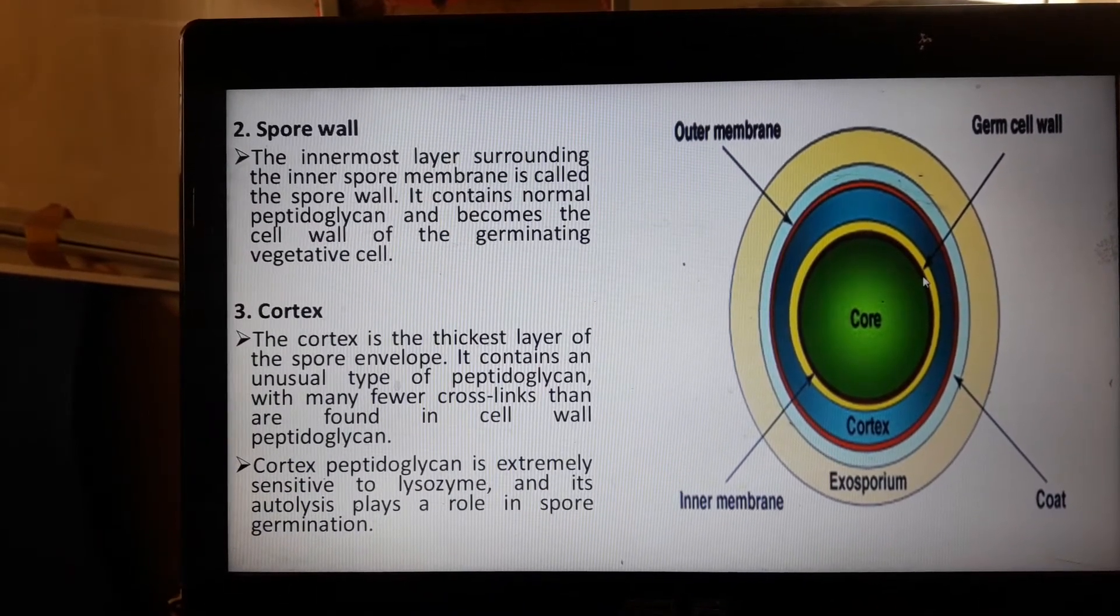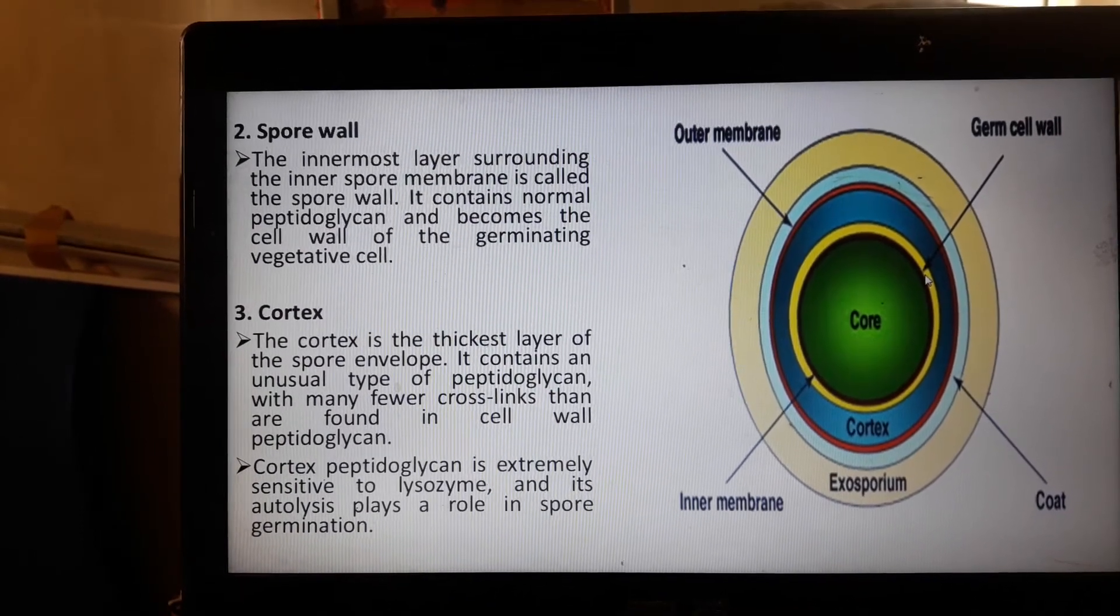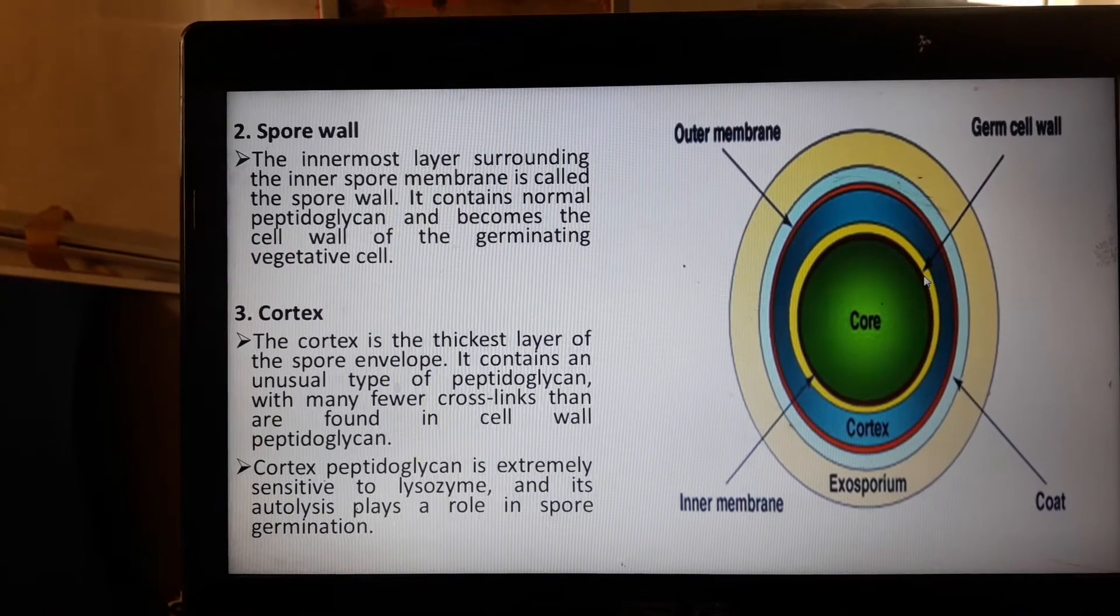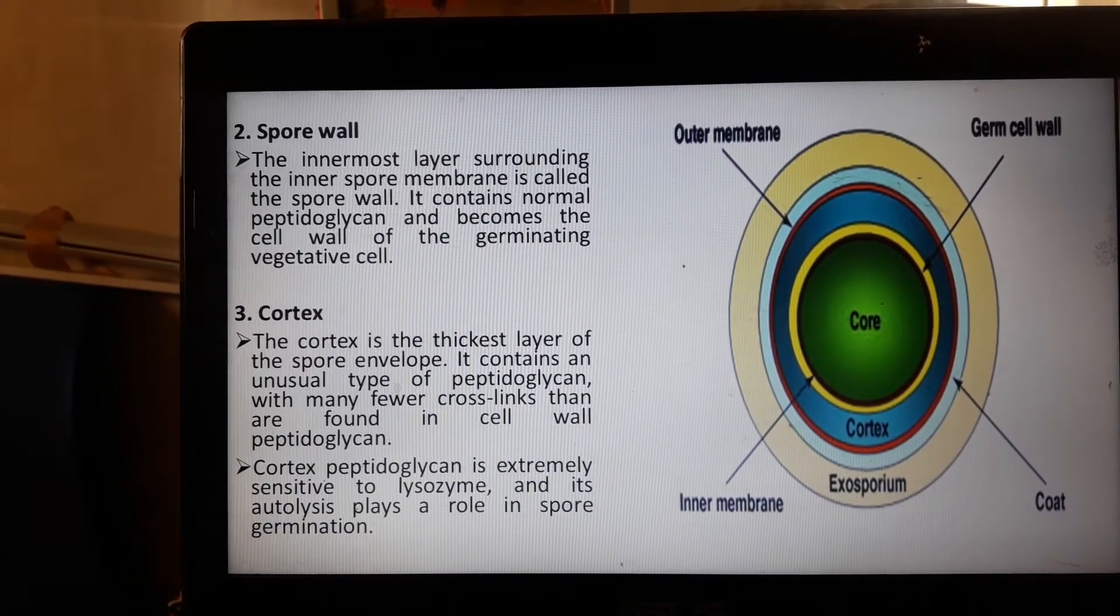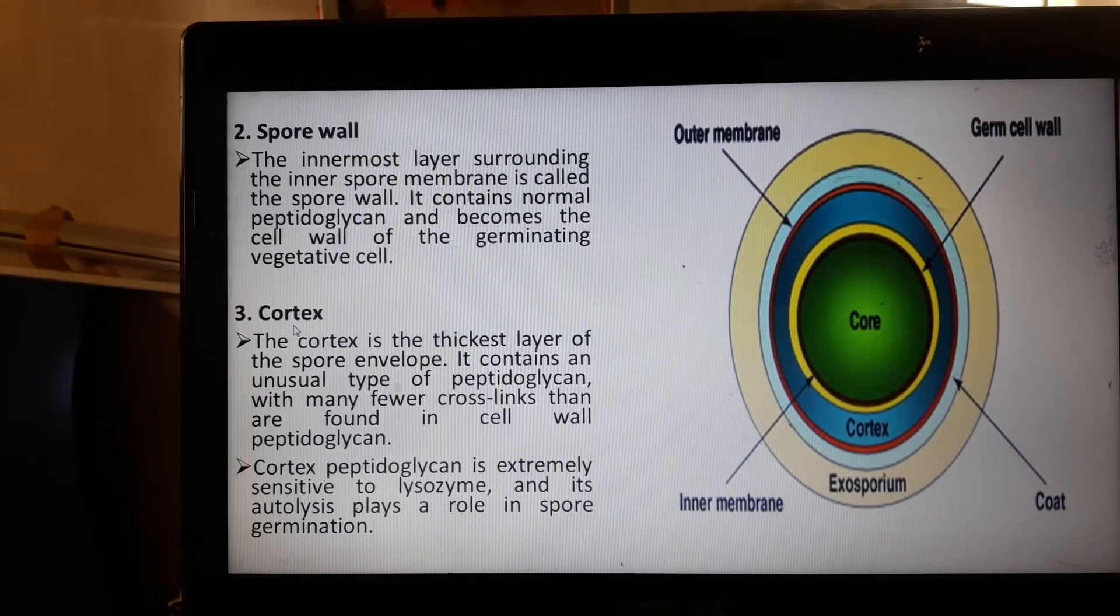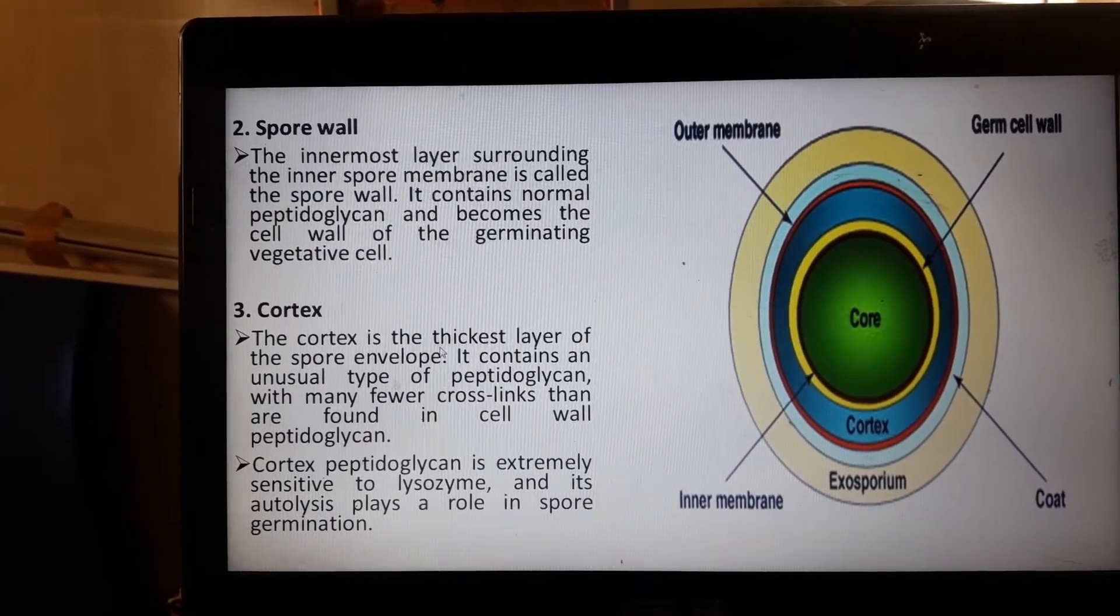The spore wall is located close to or innermost to the layer of the inner membrane or cell membrane. The cortex is the thickest layer of the spore envelope.